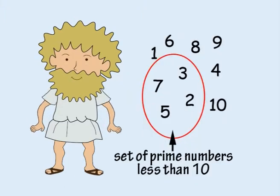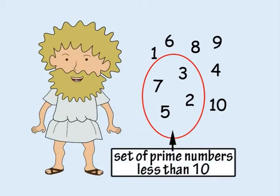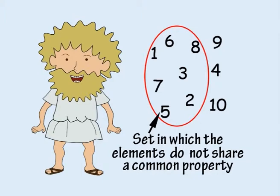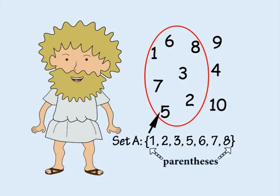So far, sets have been defined in terms of properties their elements share. But you can also have sets in which the elements don't share any common property. In this case, you have to specify exactly which elements are included in the set. Placing parentheses around the elements of a set is a useful way of showing this.